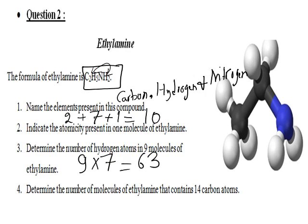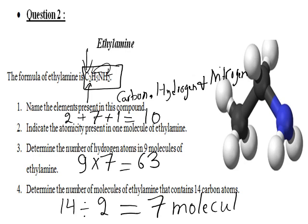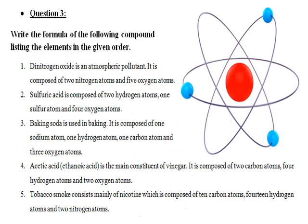Determine the number of molecules of ethylamine that contain 14 carbon atoms. In one molecule we have 2 carbon atoms, so the number of molecules is 14 divided by 2, which equals 7 molecules.